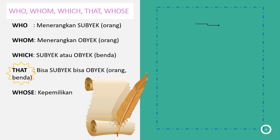Gimana ngebedainnya? Who, whom, which, that, whose. 'Who' menerangkan subjek untuk orang. 'Whom' menerangkan objek untuk orang. 'Which' bisa subjek atau objek, tapi khusus untuk benda. 'That' — bisa subjek, bisa objek, bisa orang, bisa benda, dua-duanya. Lalu 'whose' untuk kepemilikan.